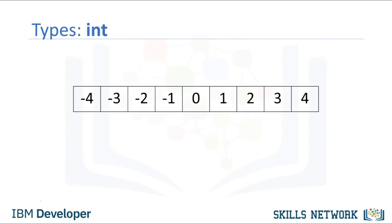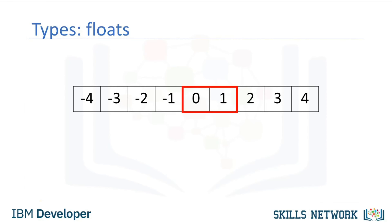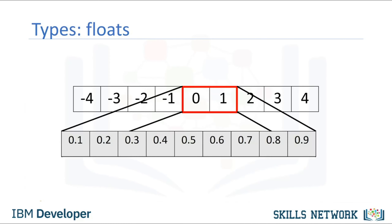Here are some integers. Integers can be negative or positive. It should be noted that there is a finite range of integers, but it is quite large. Floats are real numbers. They include the integers but also numbers in between the integers. Consider the numbers between 0 and 1 — we can select numbers in between them. These numbers are floats.